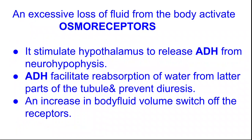So the filtrate becomes concentrated and the urine formed will be hypertonic. An increase in body fluid volume then switches off the receptors, completing the entire feedback loop. The osmoreceptors detect the change in body fluid volume, it is regulated, and the body fluid regains its balance.